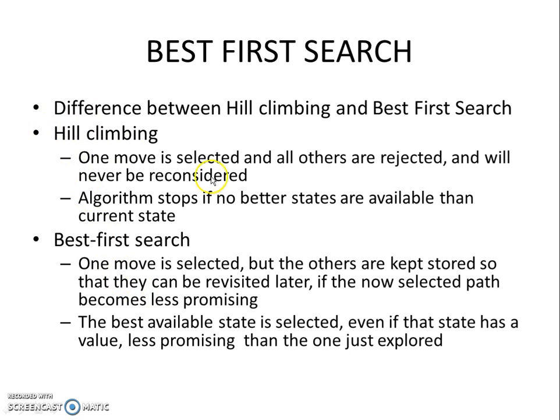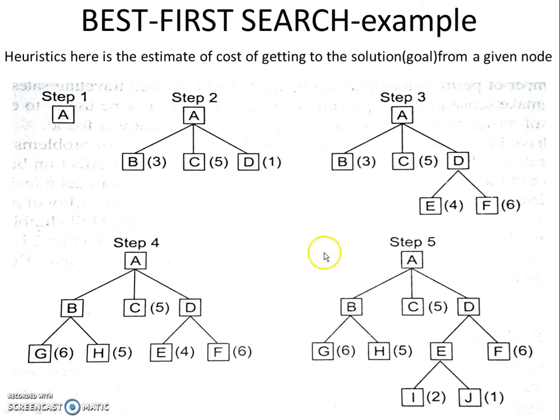What happens in best-first search? One move is selected, but the others are kept stored so that they can be revisited later if the now selected path becomes less promising. The best available state is selected even if that state has a value less promising than the one just explored. You can see this tree—from A you select B, and from here you select E, and this can go on.